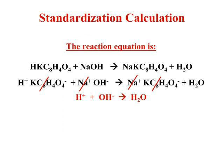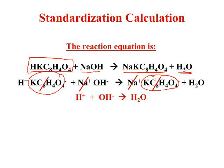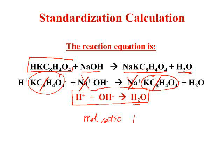Let's look at the standardization reaction. KHP, which is an acid, reacts with sodium hydroxide to produce sodium potassium phthalate and water. If you write the complete ionic equation, you cancel out the potassium phthalate ion and the sodium spectator ion. What remains is a simple monoprotic equation: H⁺ plus OH⁻ gives H₂O. The mole ratio between H⁺ and OH⁻ is one-to-one. KHP is often used because it is a monoprotic standardizing acid.